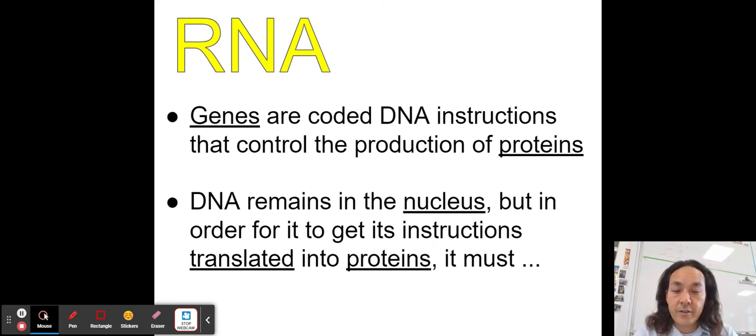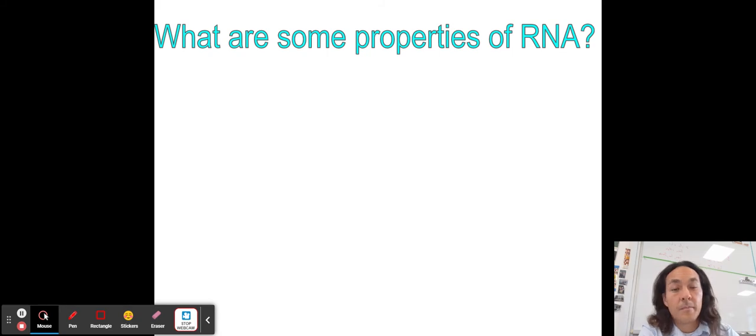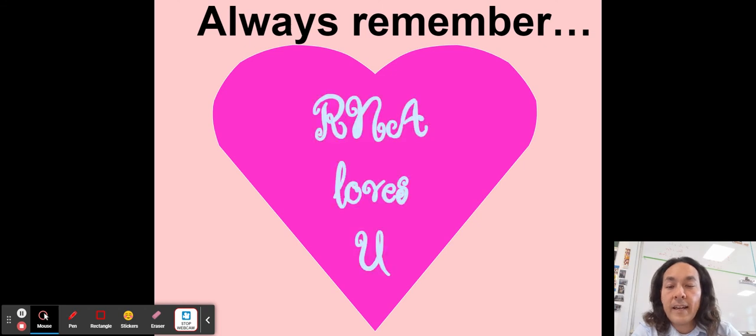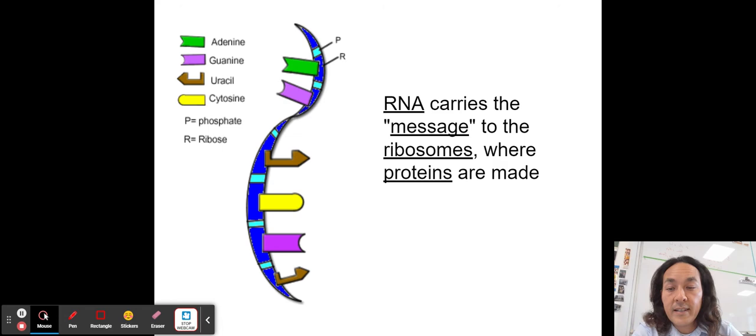Let's talk about RNA, right? Genes are coded DNA instructions to control the production of proteins. DNA remains in the nucleus, but for it to get translated into proteins, it must be sent its message to ribosomes and this message is called messenger RNA. Let's go ahead and talk about what is RNA and what are some of the important properties of RNA. Well, RNA is single-stranded, contains the sugar ribose instead of deoxyribose. Don't worry about memorizing that, but it does have a different base. It has U instead of T. And so can you make the RNA for this DNA segment? Hopefully, it should be UAUCGC. And there's a lot of practice problems on classroom for you with this. A fun little trick you can remember is that RNA loves U. So C to G and A to U.